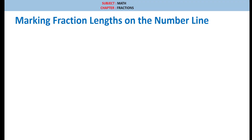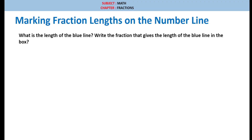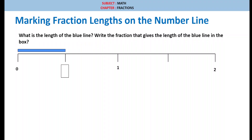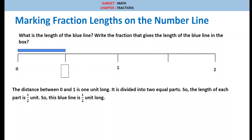Let us see marking fraction lengths on the number line. What is the length of the blue line? Write the fraction that gives the length of the blue line in the box. If we observe, 1 is divided into 2 equal parts. The distance between 0 and 1 is 1 unit long, divided into 2 equal parts, so the length of each unit is 1 by 2. Therefore, the blue line is half unit long and the fraction is 1 by 2.